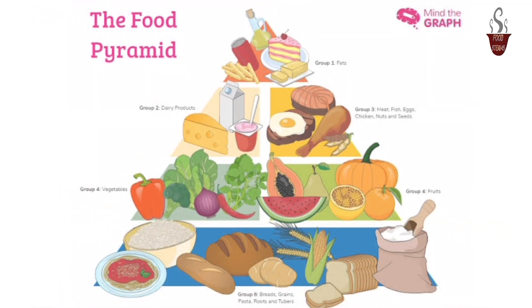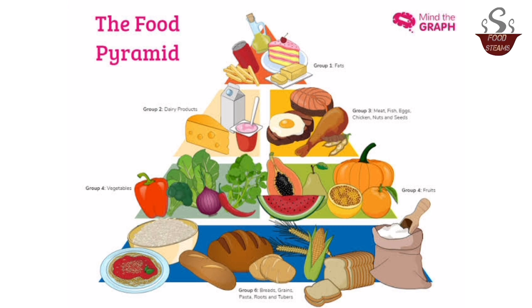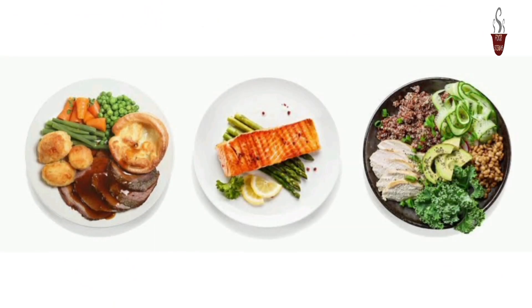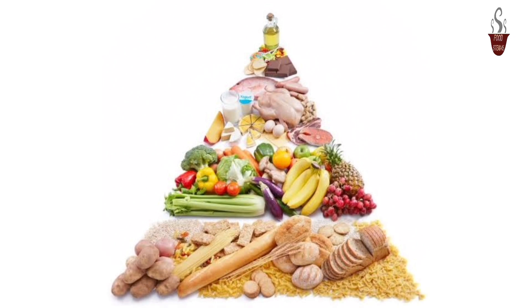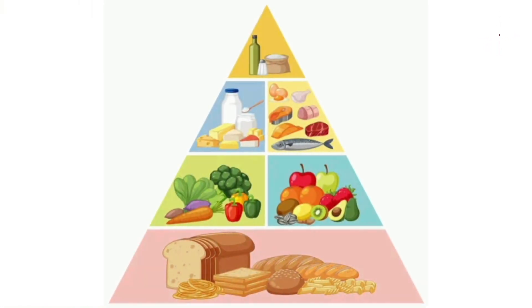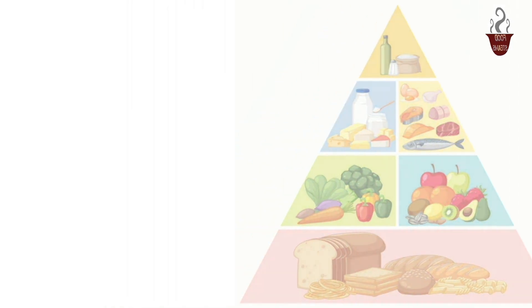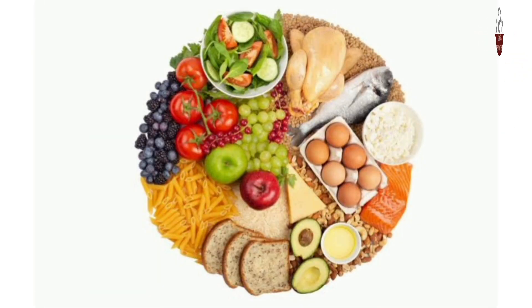Food Pyramid. The Food Pyramid is a visual representation of a recommended balanced diet. It categorizes various food groups and illustrates the ideal proportions in which they should be consumed for a healthy lifestyle, indicating recommended proportions for optimal nutrition. Its primary purpose is to guide individuals in making healthy food choices.